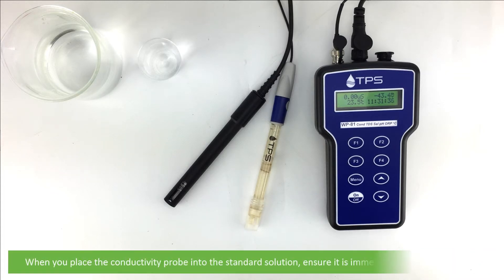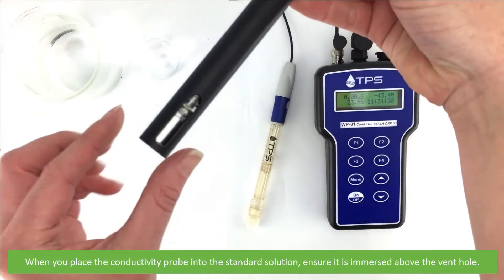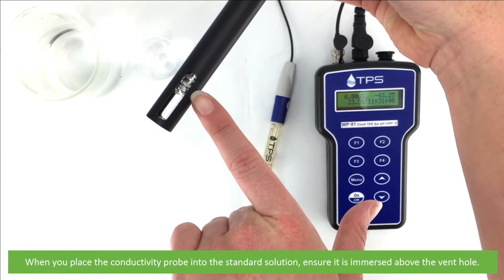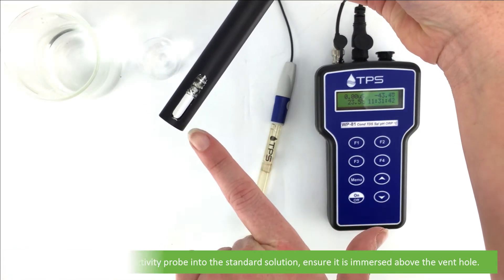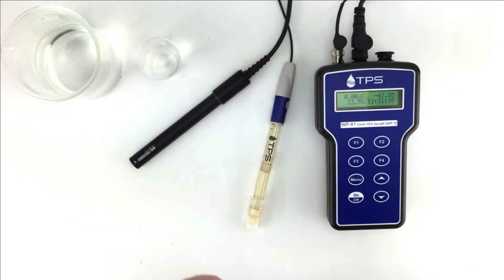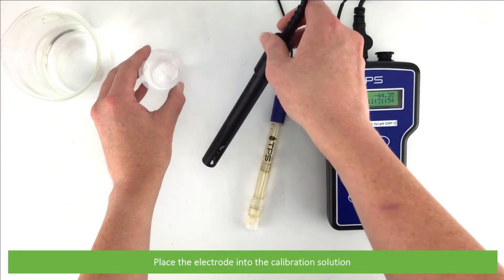When you place a conductivity probe into standard solution, ensure it is immersed above the vent hole. Place the electrode into the calibration solution.